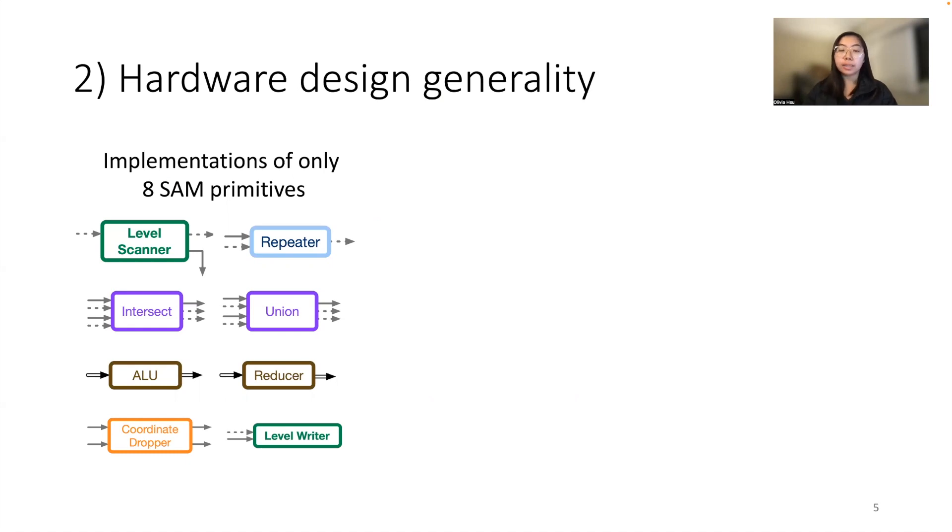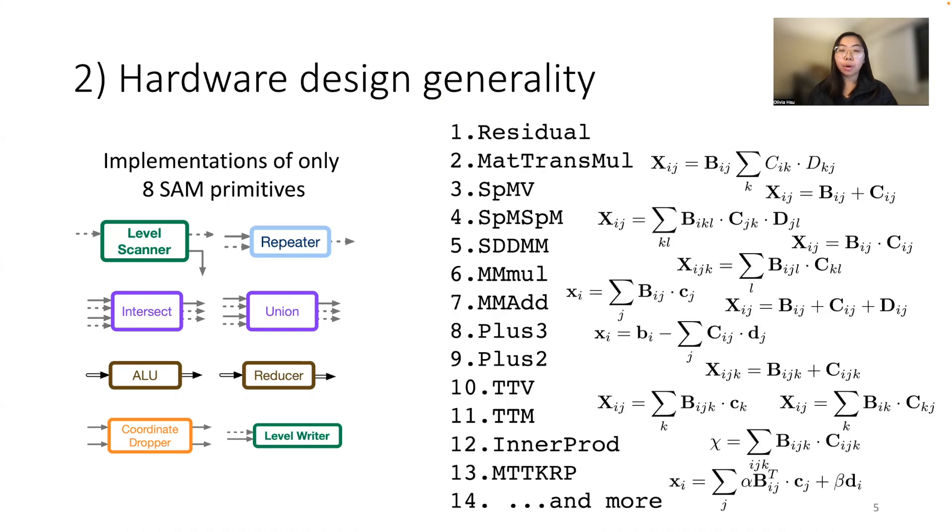What this concretely means is that our accelerator is now able to process over 14 end-to-end sparse tensor algebra applications, each having at least one schedule. So really, that's over 30 algorithms that our accelerator can compute based on just the implementation of a small number of primitives.